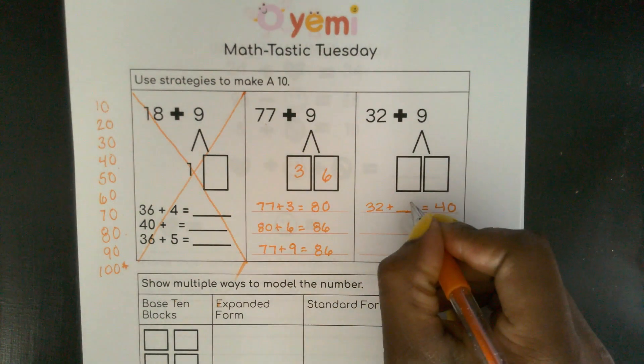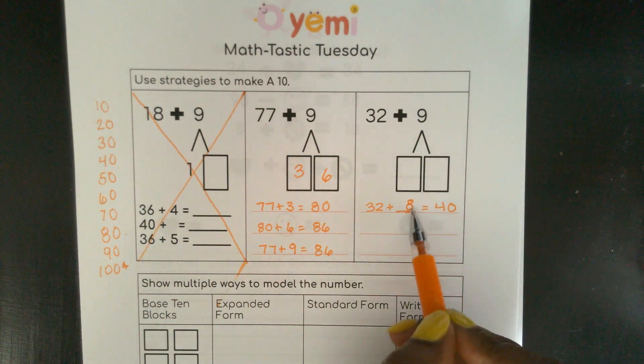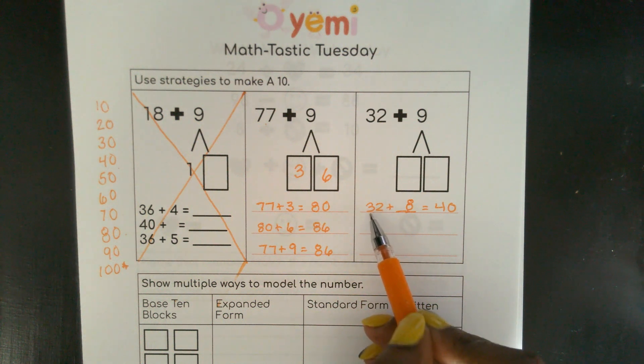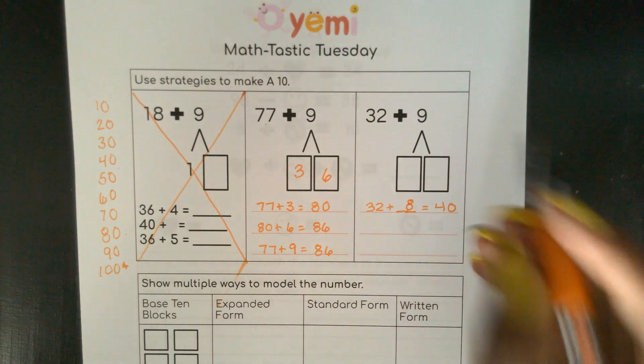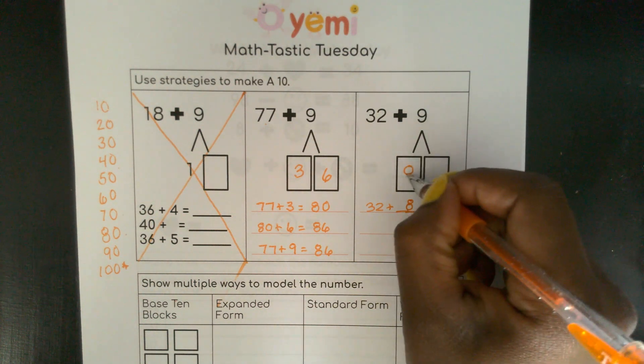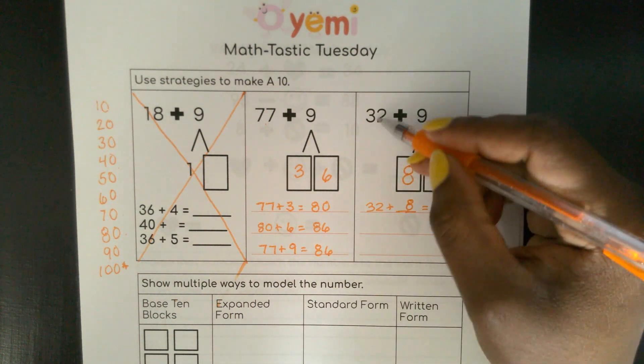So 32 plus what will equal 40? If you said 8, you're absolutely correct, because 8 plus 2 is 10, and you already have 3 tens, which is 30. So 30 plus 10 would give you 40. So let's put 8 here.